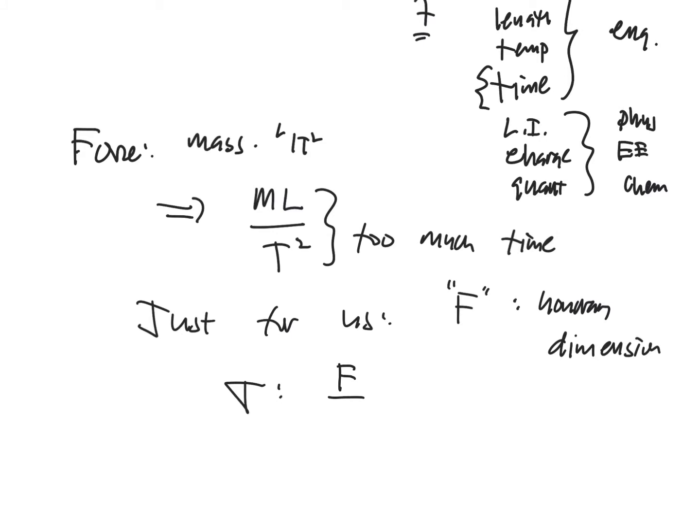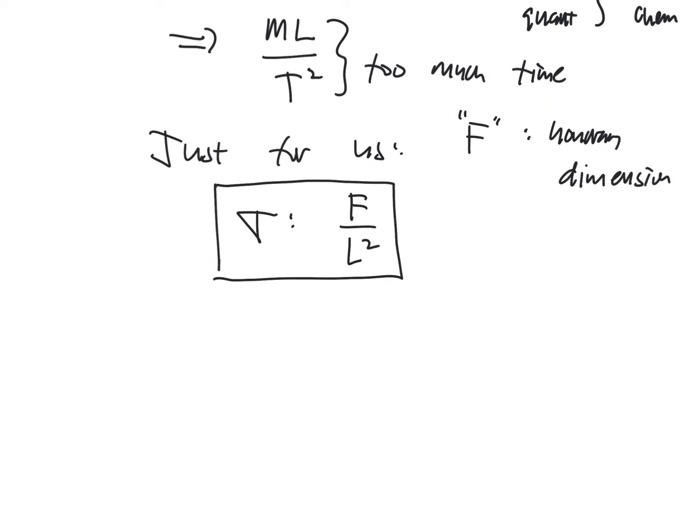What that means is we don't say this to anybody outside the class because it would be embarrassing. It's mass length per time squared. That would formally be the appropriate thing to do. But we're not. We're going to say, oh, it's F. And what that allows us to do then is say that the dimensions of normal stress is force per area, but area is not a dimension. Length is, so we would say force per length squared. So the dimensions of normal stress are force per length squared. The units, on the other hand, are the specific system that you're using. Units would be, for example, pounds per square inch, or psi. Or it would be something like newtons per square meter, or the pascal.